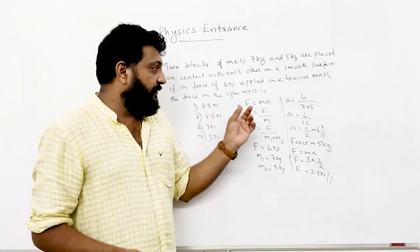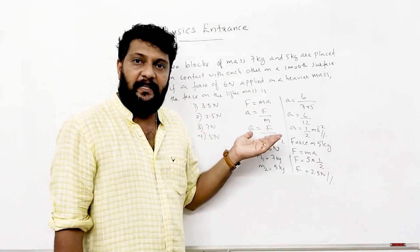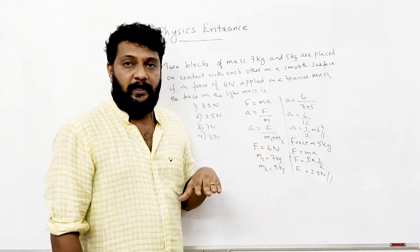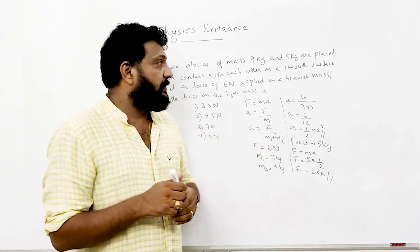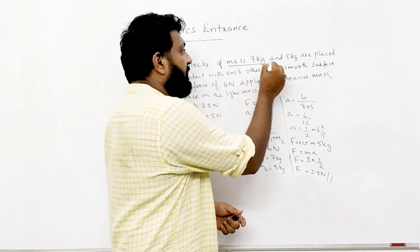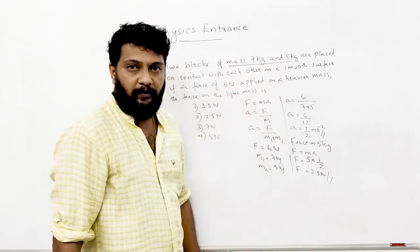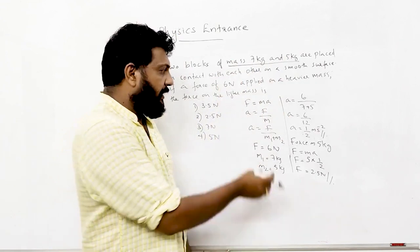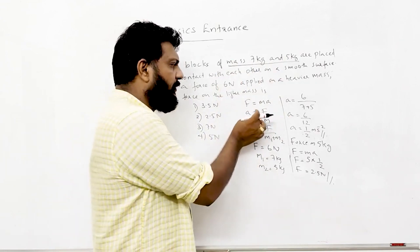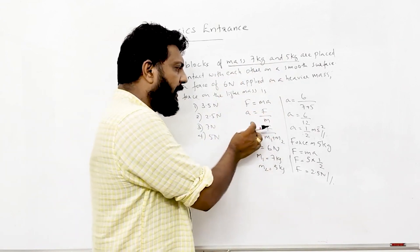Using F = ma, so a = F/M. With two masses 7 kg and 5 kg, total mass = 12 kg, so a = 6/12.